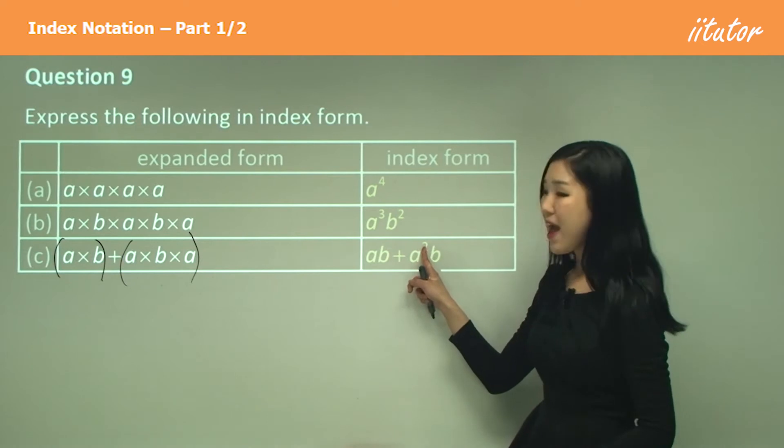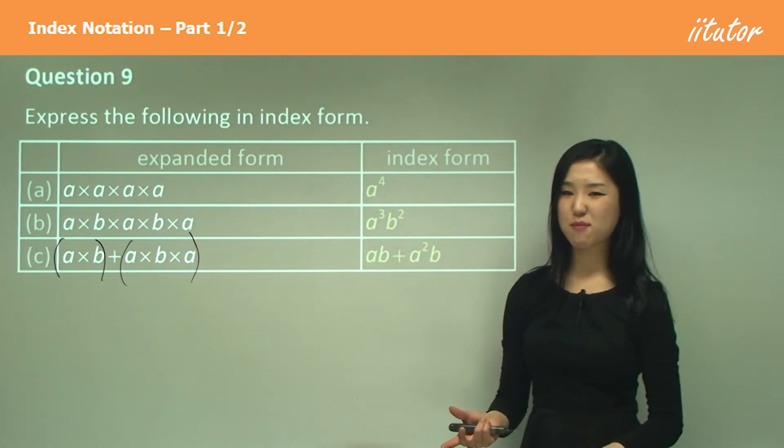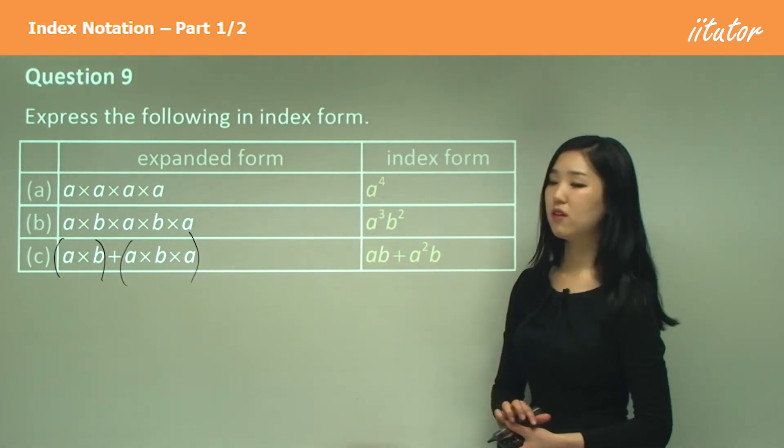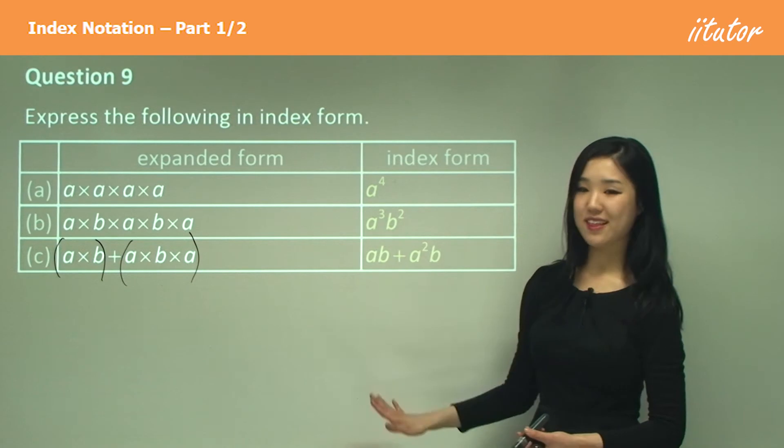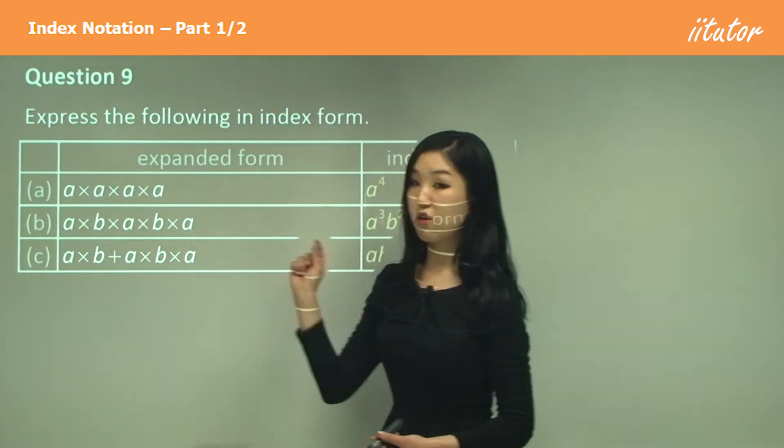And here there's two lots of a's and one b. So it's going to be a squared b because there's two lots of a's and one b. And we simply add them up. But we can't add them up because they're not like terms. So we leave it like that. That's all we're asked to do. I think you can get confused with the groupings.